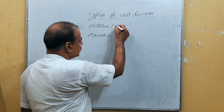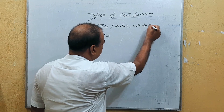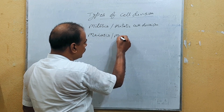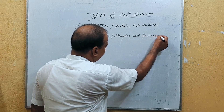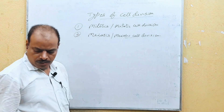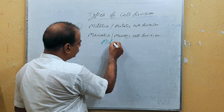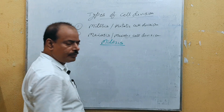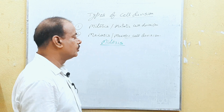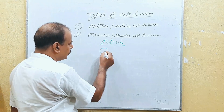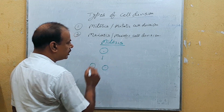Mitosis is also known as mitotic cell division, and meiosis is also known as meiotic cell division. Mitosis is the cell division in which one parent cell divides to form two daughter cells — so from one cell, two daughter cells form. This is known as mitosis.